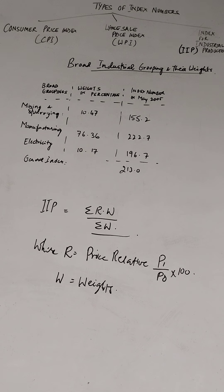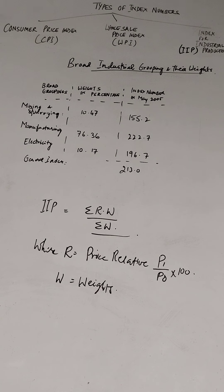It is a quantity index and not a value index — that is a basic thing to remember. For example, a true or false question: 'Index for industrial production is a value index' — the answer is false, it is a quantity index. It measures the net changes in the total volume of industrial production. During a given period there may be an increase in output of some industries and reduction in others. A number of index numbers of industrial production are constructed in India by government and non-government bodies.